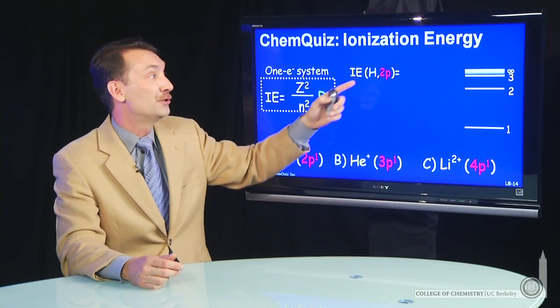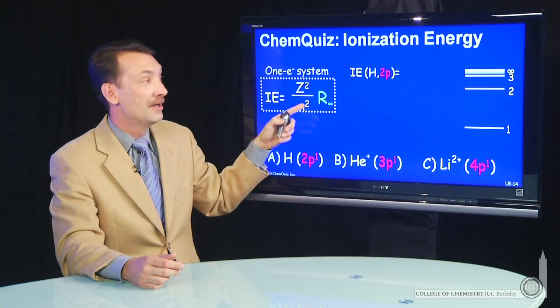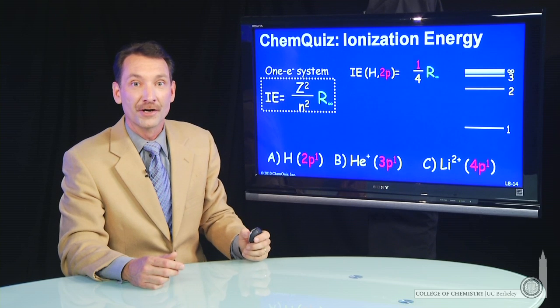For hydrogen in the 2p state, z is 1, the charge on the nucleus. n is 2. So we'll have a quarter of a Rydberg to ionize.